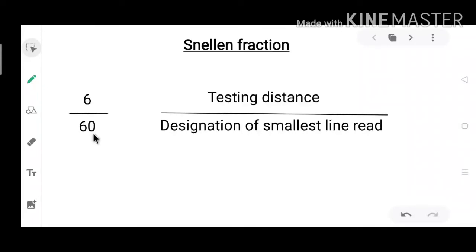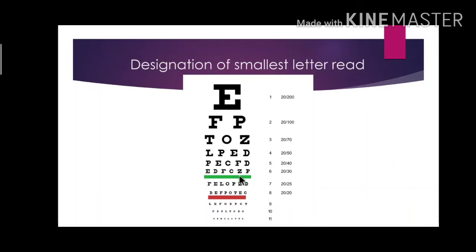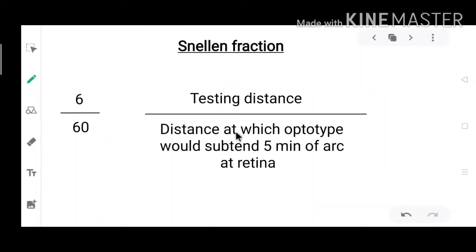Now coming to the denominator — we have to concentrate and understand this properly. In the visual acuity 6/60, the 60 is the designation of the smallest line read. Whichever small line the patient is able to read, that is the designation used as the denominator. For example, if the patient is able to read only till the 6/24 line, the visual acuity is recorded as 6/24. But this is a gross explanation; we need to know exactly what the denominator means.